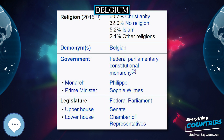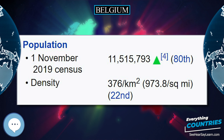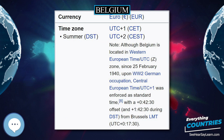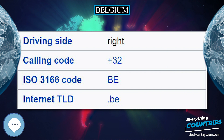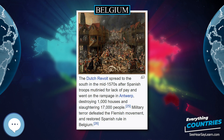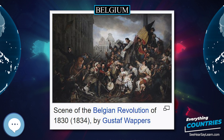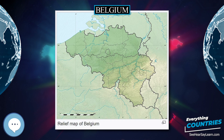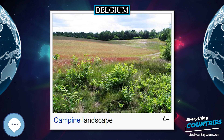The climate is maritime temperate with significant precipitation in all seasons, like most of northwest Europe. The average temperature is lowest in January at 3°C and highest in July at 18°C. The average precipitation per month varies between 54 millimeters for February and April, to 78 millimeters for July. Averages for 2000–2006 show daily temperature minimums of 7°C and maximums of 14°C, and monthly rainfall of 74 millimeters — about 1°C and nearly 10 millimeters above last century's normal values.